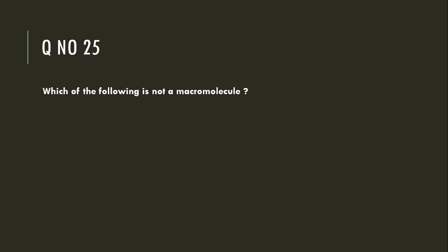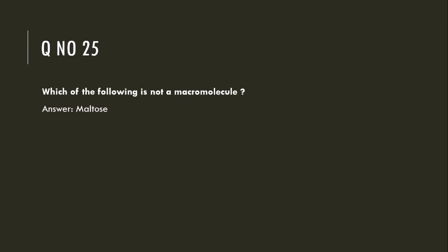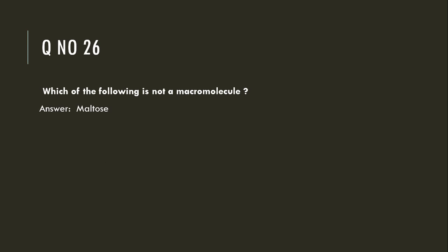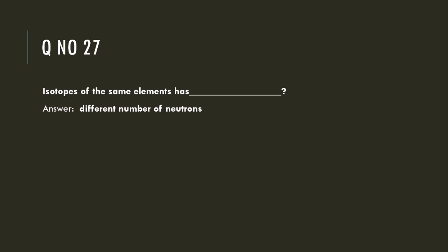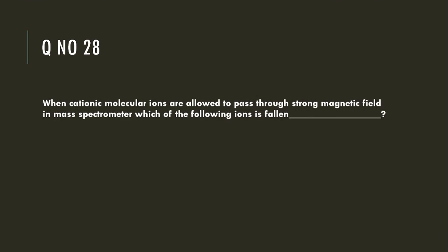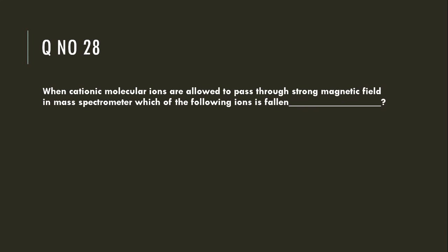Which of the following is not a macromolecule? Maltose is not a macromolecule. Ions are allowed to pass through a strong magnetic field in a mass spectrometer.